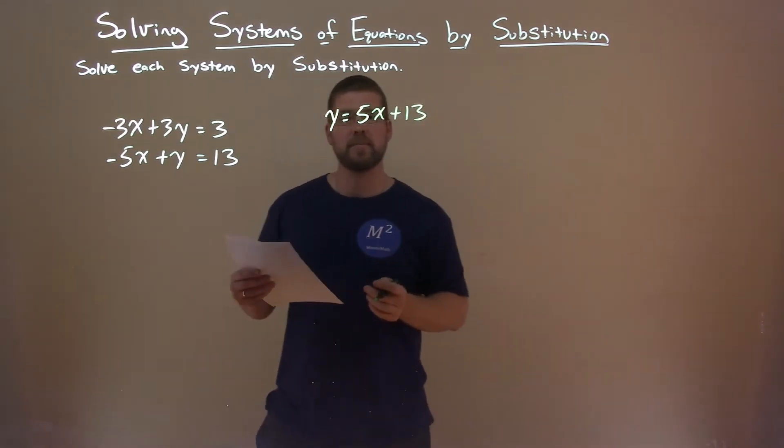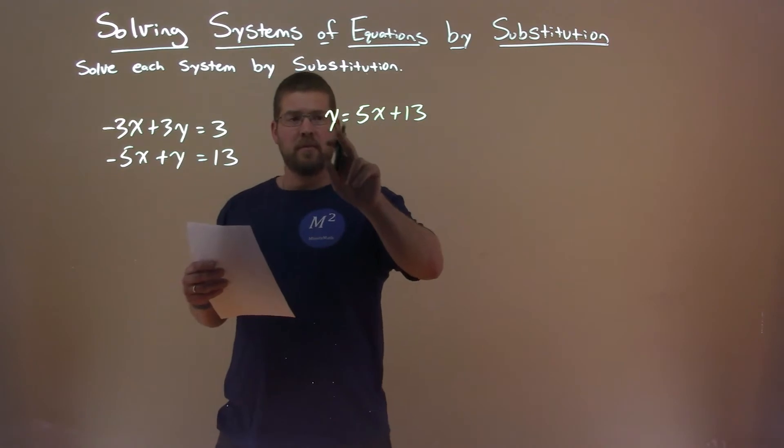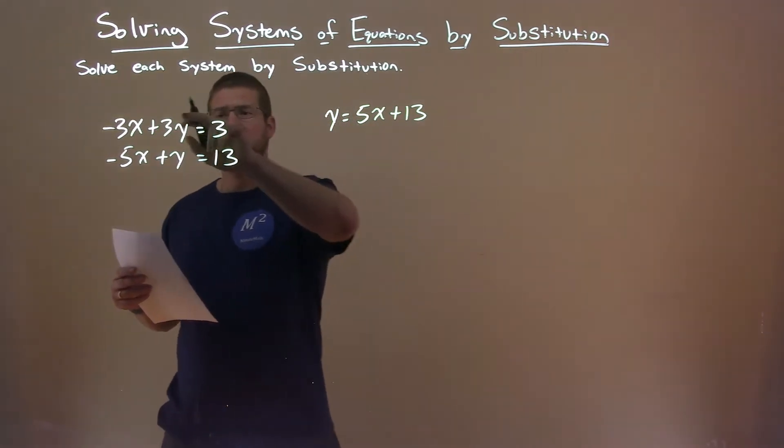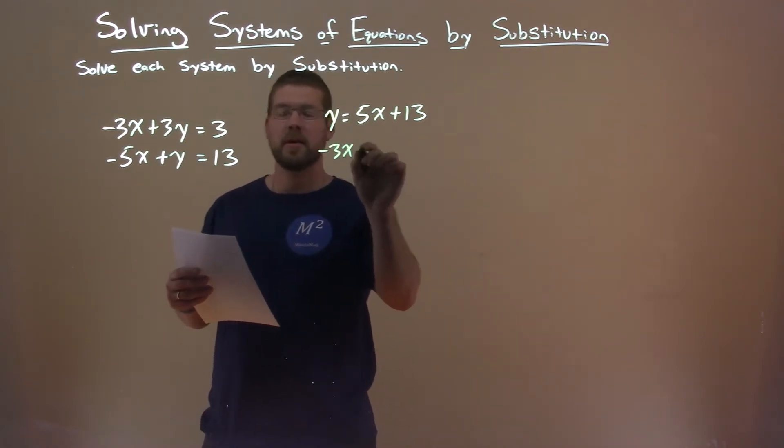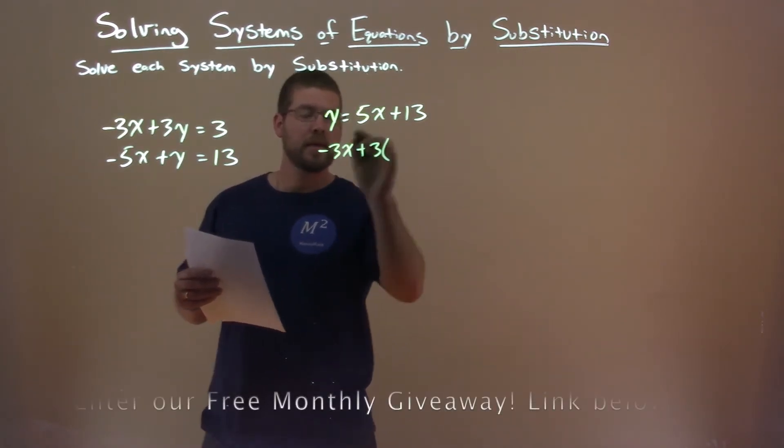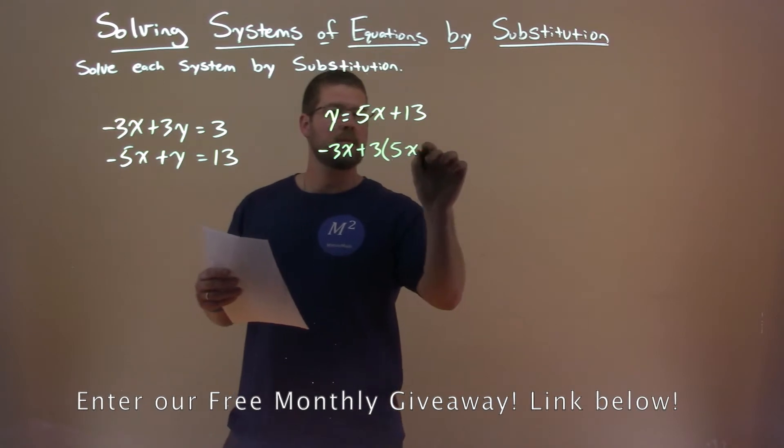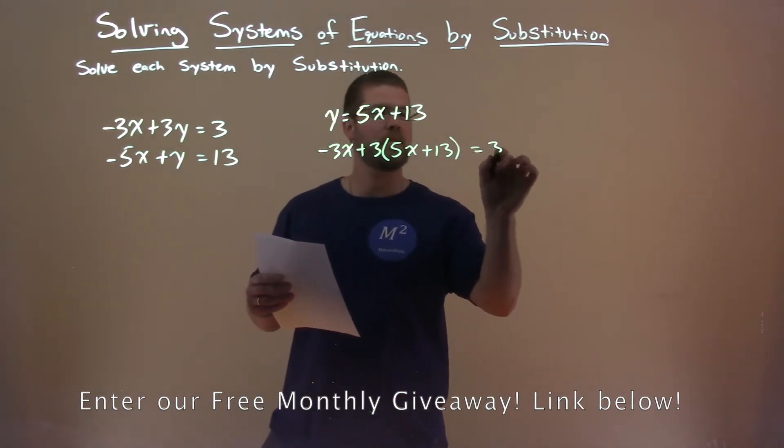How does that help us? We can take that y value, being 5x + 13, and substitute it in for y in the first equation. So we have -3x plus 3 times y, which is 5x + 13, and that equals 3.